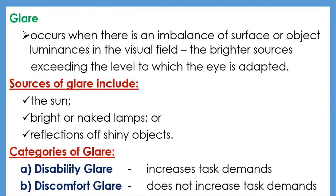Glare usually occurs when there is an imbalance of surface luminances in the visual field, with brighter sources exceeding the level to which the eye is adapted. Although the retina can adapt to different levels of luminance, it cannot adapt selectively to large simultaneous discontinuities. If ambient luminance is high compared to task luminance, the retina will adapt to the former and the task will appear dim and more visually demanding — this can happen when VDU screens are placed against a window. If illuminance in a room is very low, the retina will dark-adapt and be more vulnerable to glare.